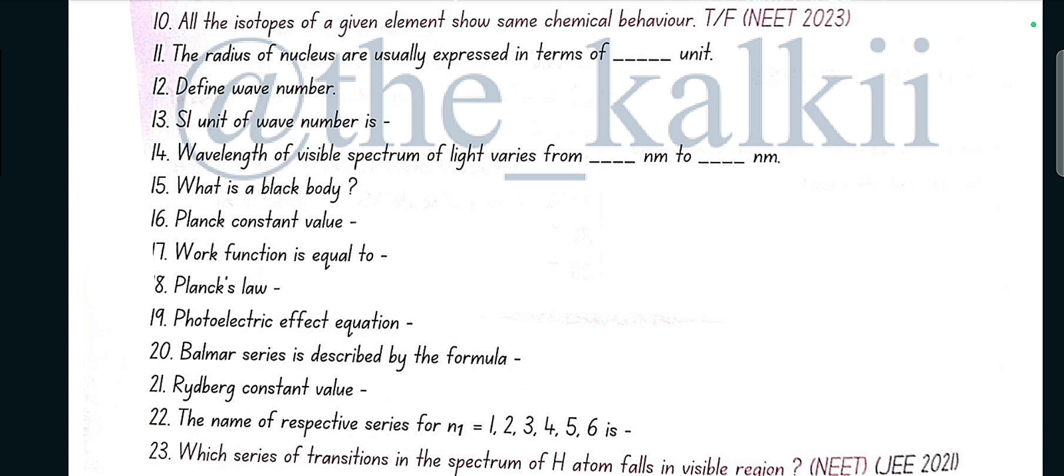to 750 nanometer. What is a black body? The ideal body which emits and absorbs radiations of all frequencies is called black body. Planck constant value is 6.626 into 10 raised to the power minus 34 joule second. Work function is equal to h nu not. Photoelectric effect equation is h nu equals to h nu not plus mv square by 2.